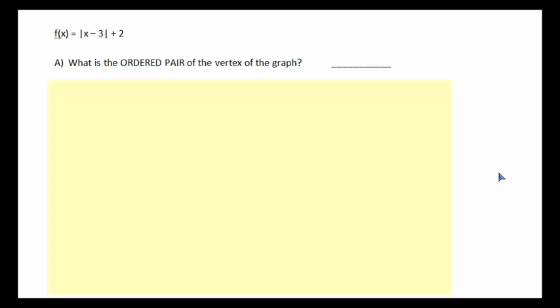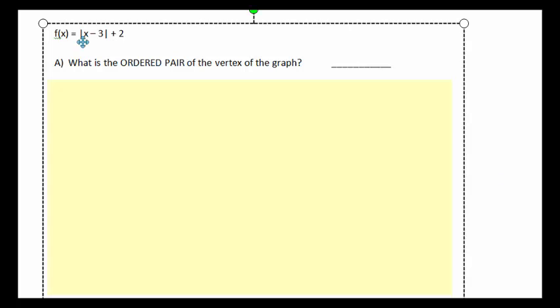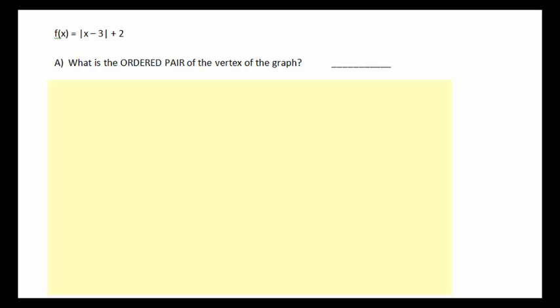The first thing we have to figure out in this problem is the ordered pair of the vertex of the graph. Now, you should know that an absolute value graph is going to give you a V-shaped graph, or an absolute value function is going to give you a V-shaped graph.